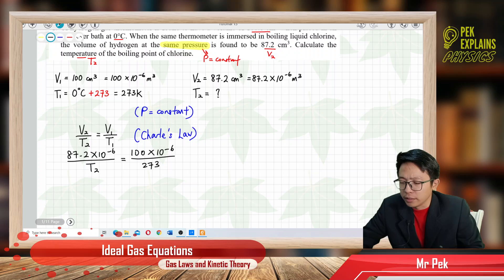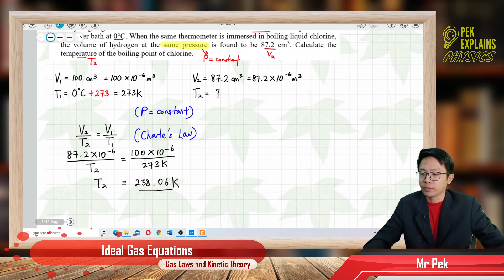This is in Kelvin. Finally, the temperature we get is T₂ = 238.06 Kelvin. That's it, using Charles's Law. That's for question 1. All right, thank you.